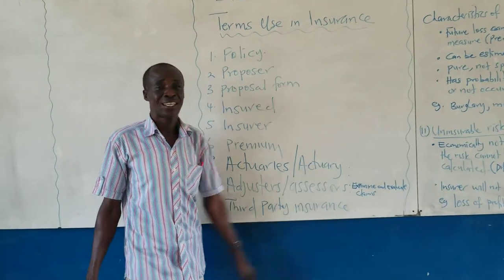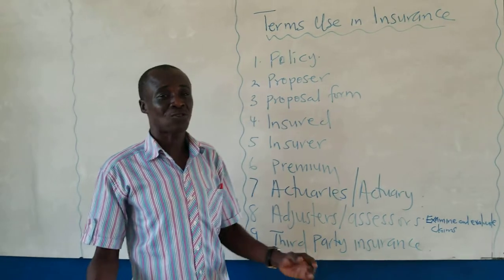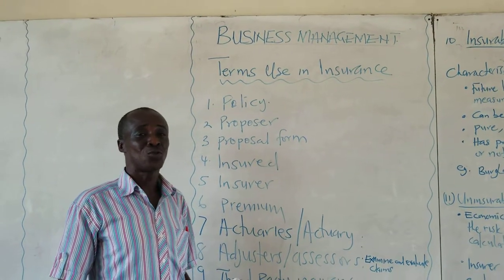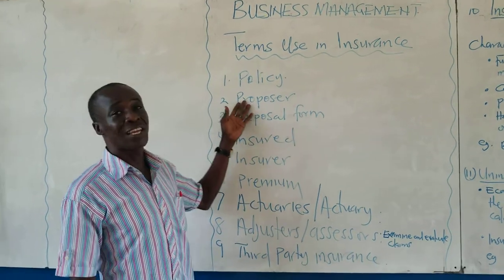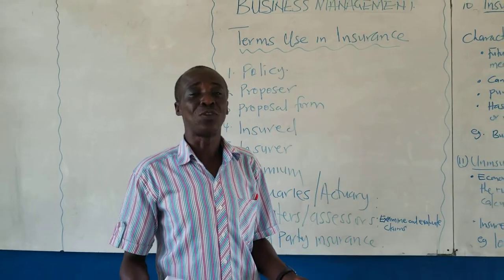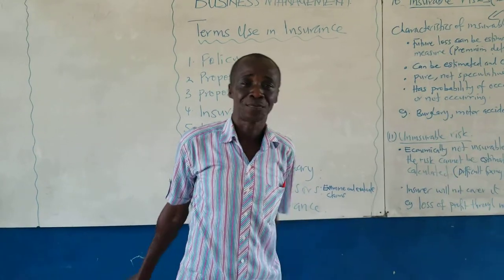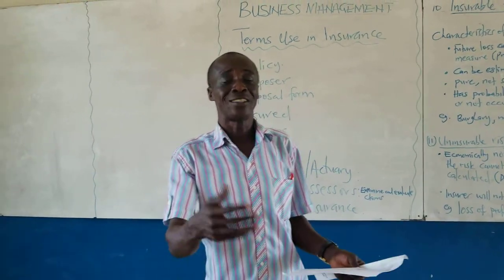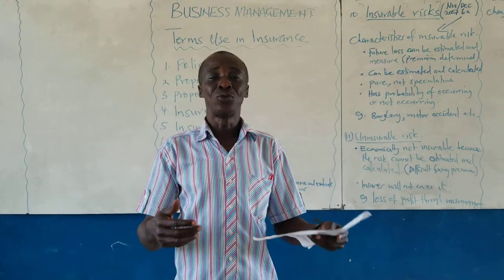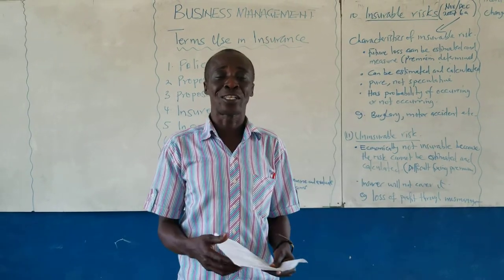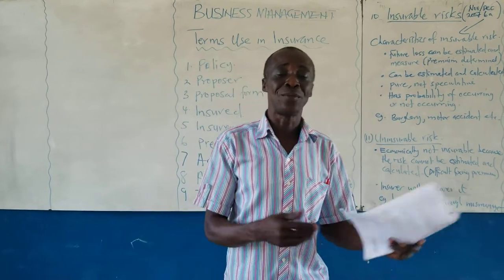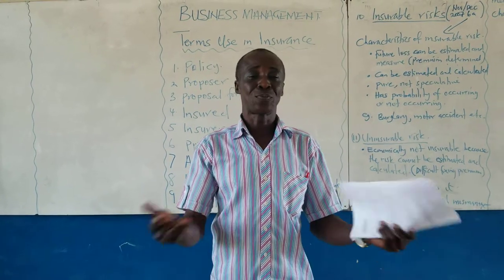So the insurance policy is the contract itself. In that contract, you know what you are supposed to do and the insurer knows what they are supposed to do. Then there is the proposer — you, who are seeking to be insured, are the proposer. You go to the insurance company and tell them you want to insure something; you are the proposer.